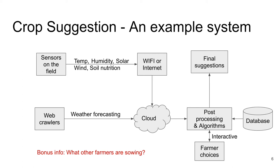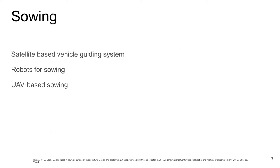An additional bonus could be knowing what other farmers are sowing - what farmers in the locality, state, or neighboring state are growing. For example, if everybody is growing the same vegetable, that won't be beneficial for that particular farmer. If everybody is growing potato, potato prices will definitely fall. So that collective information could be very, very useful. After the crop suggestion, the farmer will start the sowing process.